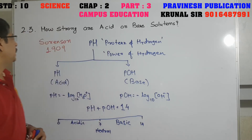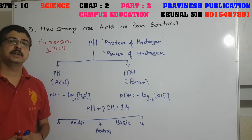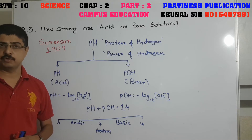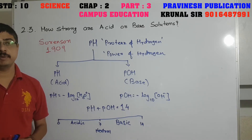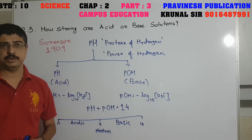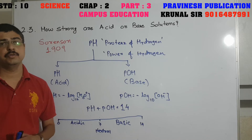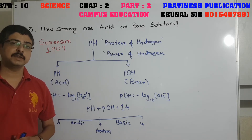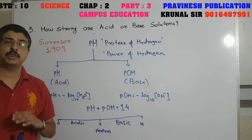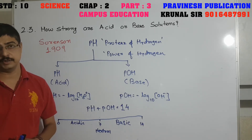Today I am going to explain Standard 10 Chapter 2 - Acid, Base and Salt, Part 3, Topic 2.3: How strong are acid or base solutions? In the last two videos, Part 1 and Part 2, we explained that solutions are acidic, basic, or neutral, and we can check this with litmus paper, universal indicator, and artificial indicators like phenolphthalein and methyl orange. However, they only tell you whether a substance is acidic, basic, or neutral.